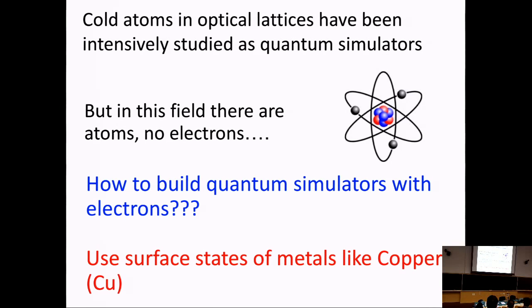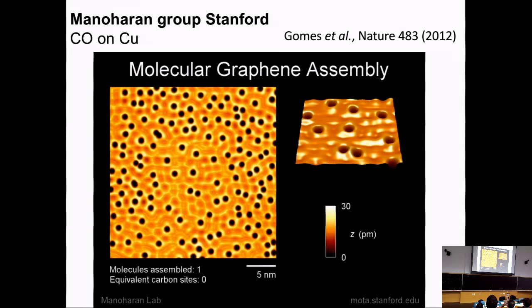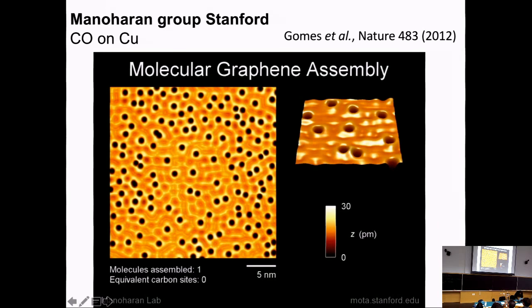I'm going to tell you about our new approach to build electronic quantum simulators using the surface states of metals like copper-111. Everything started with the pioneering work by Don Eigler with the quantum corrals. Then in 2012, Manoharan took it back to engineer what he called 'molecular graphene.' The first author on that paper is a Japanese-Brazilian who is now a professor in the U.S.